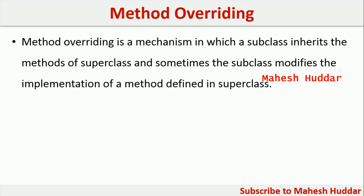Method overriding is a mechanism in which the subclass inherits the method of the superclass, and sometimes the subclass modifies the implementation of the method defined in the superclass. That is, whenever we use the inheritance concept, all the methods present in the superclass are inherited in the subclass. Sometimes a subclass modifies those particular methods — such a concept is called method overriding.